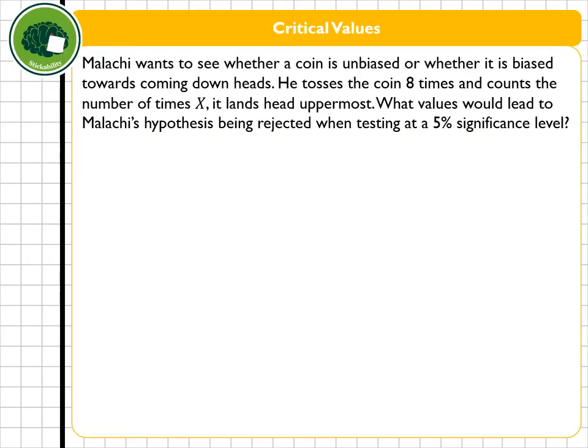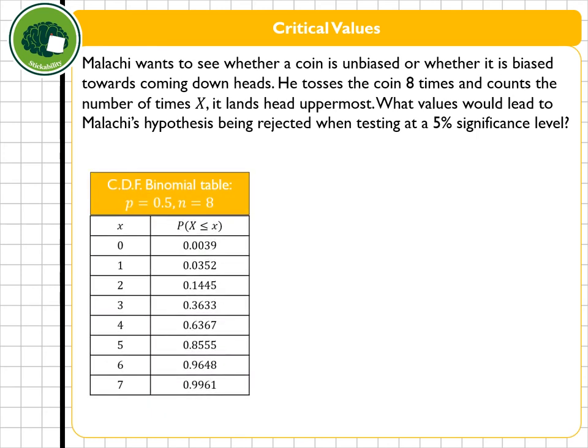Time for an example. Malachi wants to see whether a coin is unbiased or whether it's biased towards coming down heads. He tosses the coin eight times and counts the number of times x it lands head uppermost. What values would lead to Malachi's hypothesis being rejected when we're testing at a five percent significance level. Now to help me, obviously your calculator does this for you, but I thought I'd display the table of values that your calculator will give you for the cumulative values when p is 0.5 and n is 8. So for example when x is zero, i.e. I get zero heads when tossing the coin eight times, my probability is 0.0039 and so on and so forth.